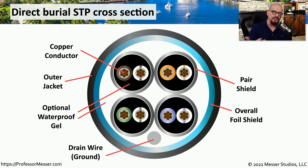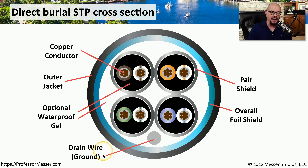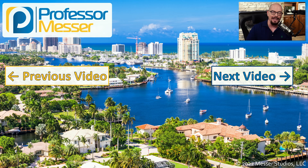Here's a cross section of a shielded twisted pair used as a direct burial cable. You can see the four pairs of the ethernet cable, each surrounded by a waterproof gel with a shield around each individual pair, helping keep water away from all pairs within the cable. There is also what we call a drain wire — not referring to water, but draining away additional voltages through a ground wire that extends the length of the cable.